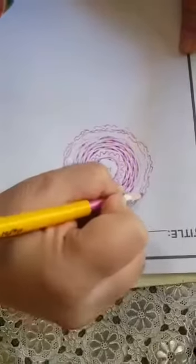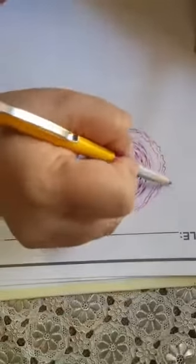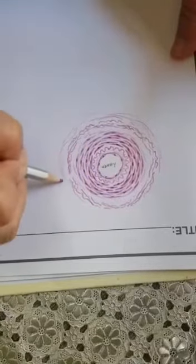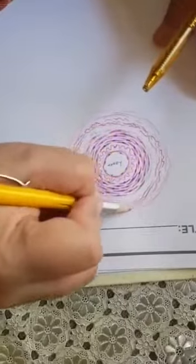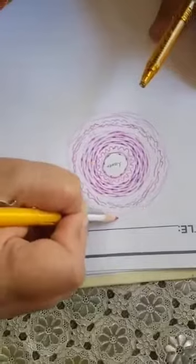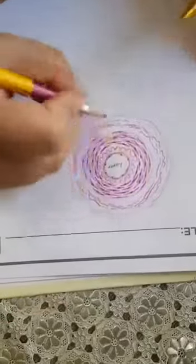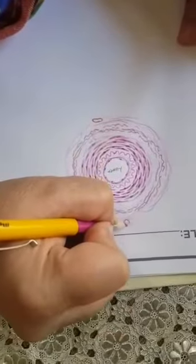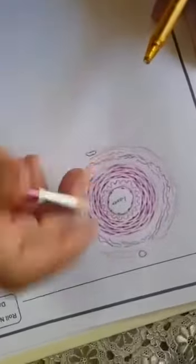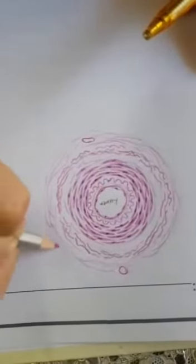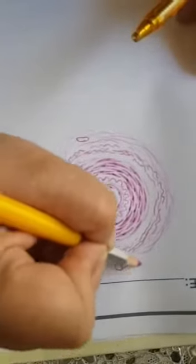Outside this there is tunica adventitia. I will just form the connective tissue fibers here. This tunica adventitia contains irregular connective tissue along with blood vessels. You will draw blood vessels also in this layer. These blood vessels are vasa vasorum, and this tunica adventitia is as thick as tunica media.